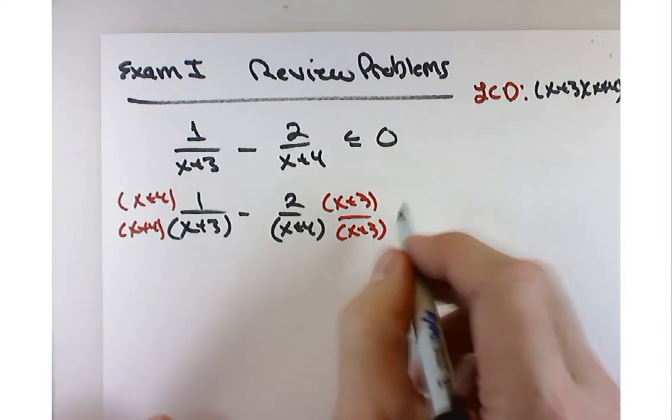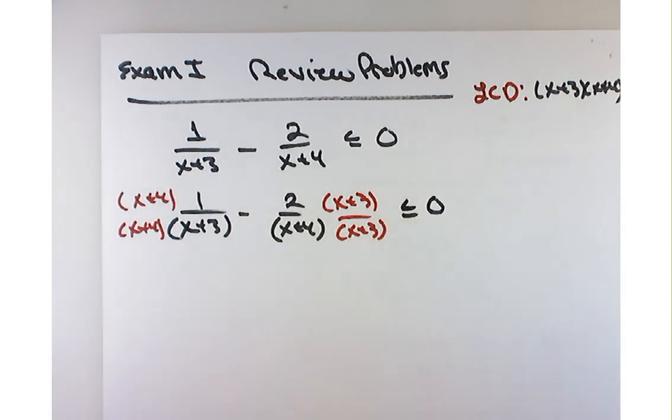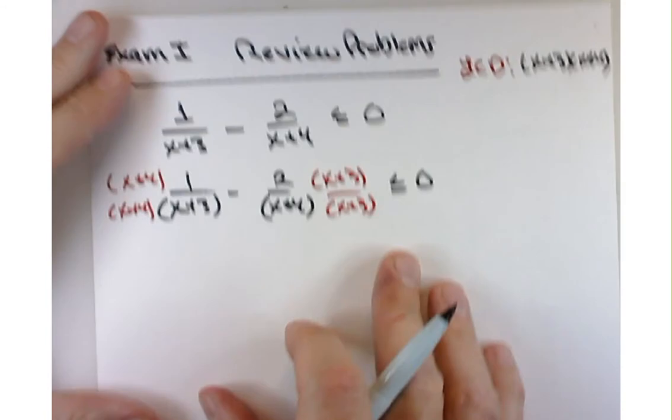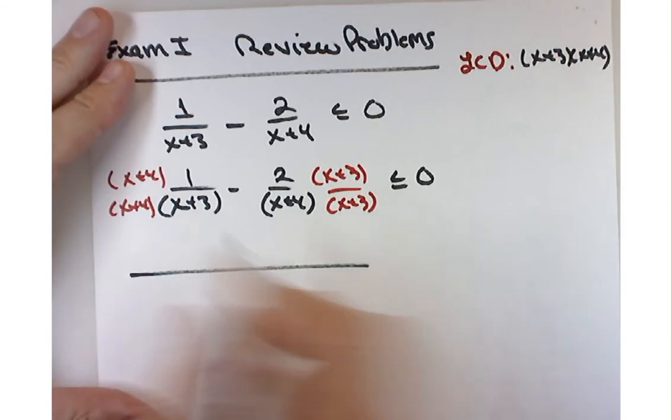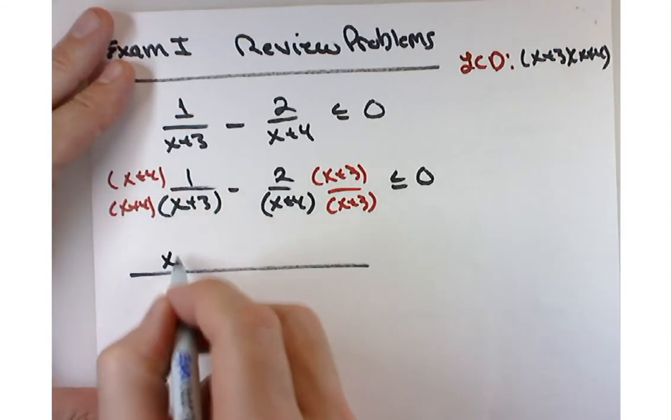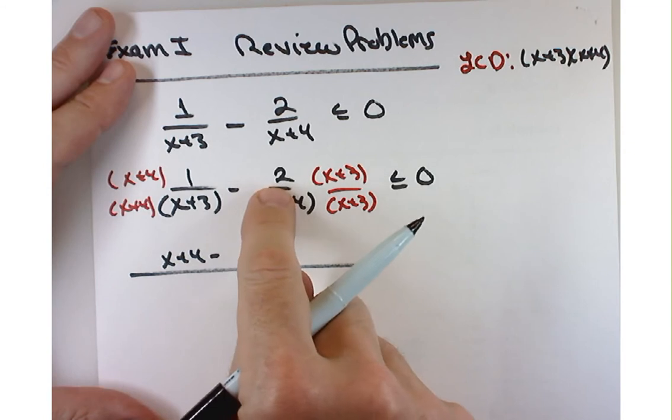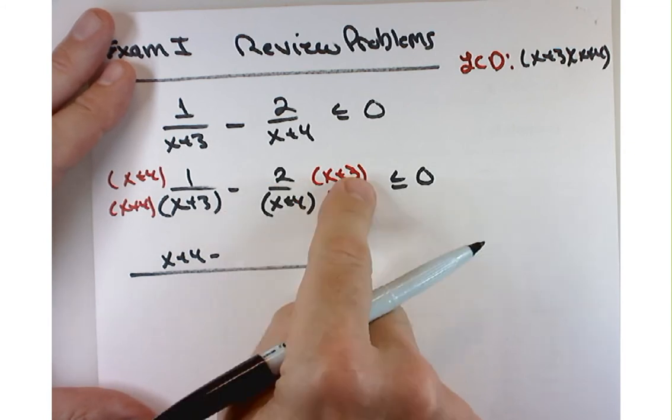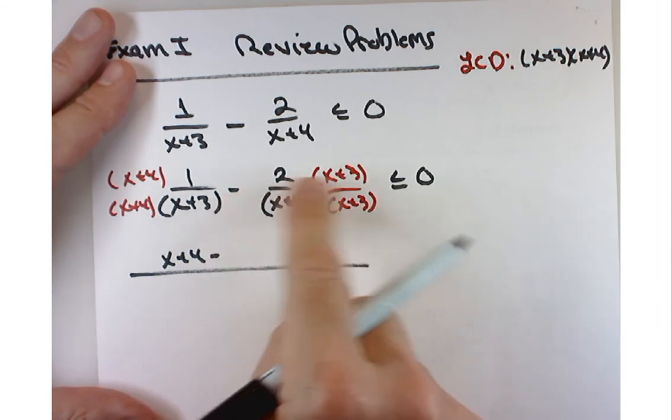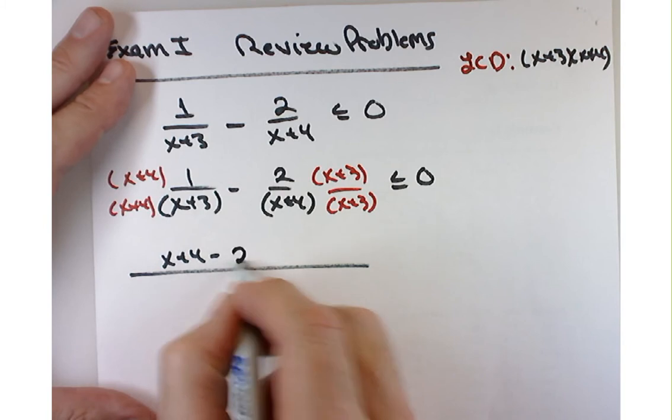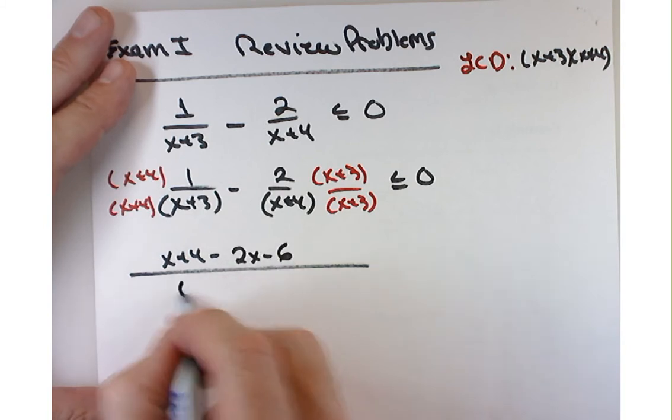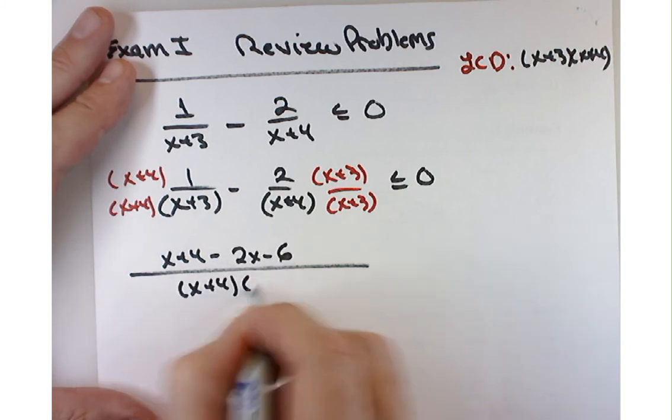I still want to know whether that's less than or equal to 0. Well, I've got a common denominator, so that gives me x plus 4, and here I'm going to distribute not only the 2, but the negative and the 2, so that's going to be minus 2x minus 6 over x plus 4 times x plus 3.